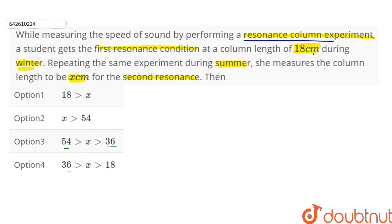The resonance column experiment means that the column is open at one end. Now during the winters, it is said that at first resonance condition, the column length is 18 cm. That is, the first resonant frequency nu1, which is given by V1 by 4L1, L1 is equal to 18 cm.